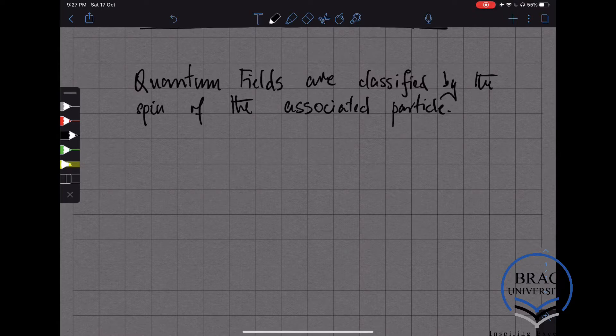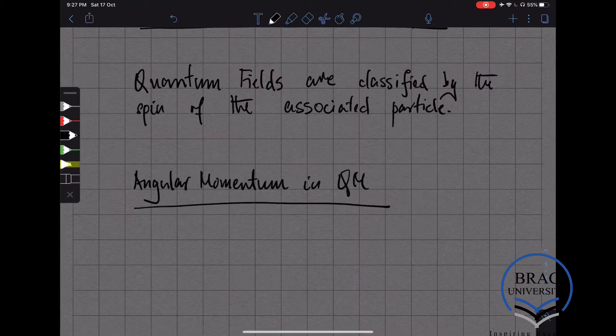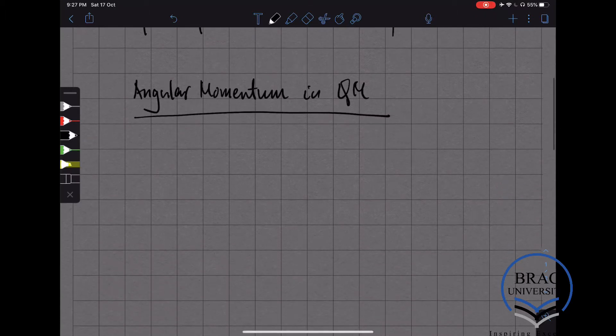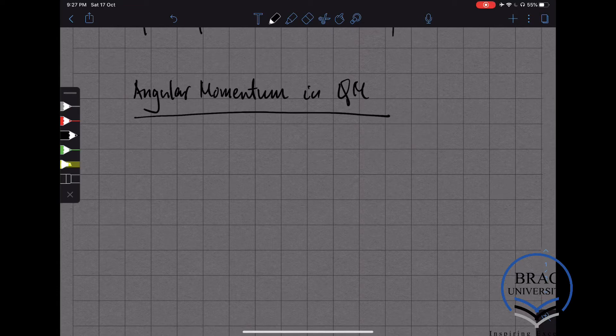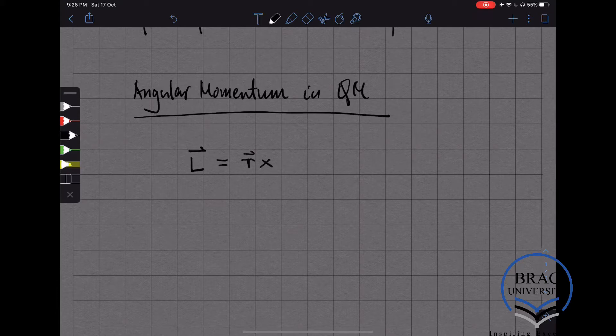What is angular momentum or spin? Let's review angular momentum in quantum mechanics. The angular momentum in quantum mechanics is a triplet of observables. That is, it's a vector operator with three components, and it's given by r cross p, just as in classical mechanics.